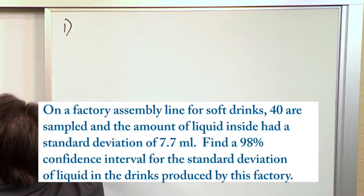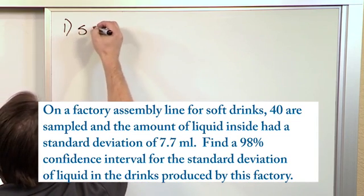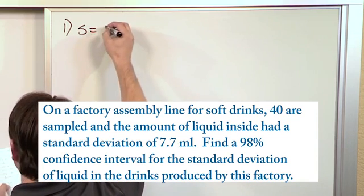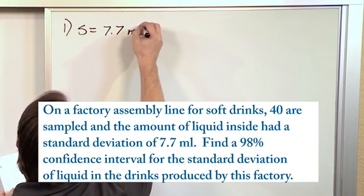So here's why you have to remember, S squared is variance, but we weren't given that in the problem. We were given S, which is the standard deviation, 7.7 milliliters.